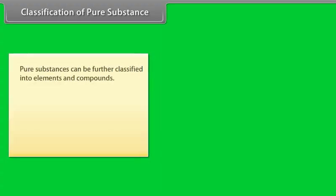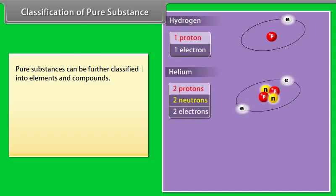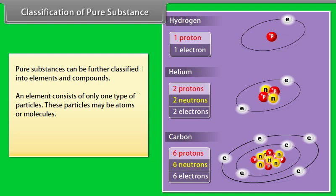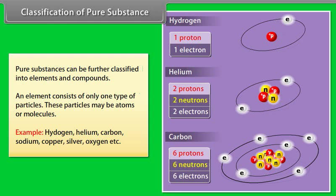Pure substances can be further classified into elements and compounds. An element consists of only one type of particles. These particles may be atoms or molecules. Examples: Hydrogen, Helium, Carbon, Sodium, Copper, Silver, Oxygen, etc.